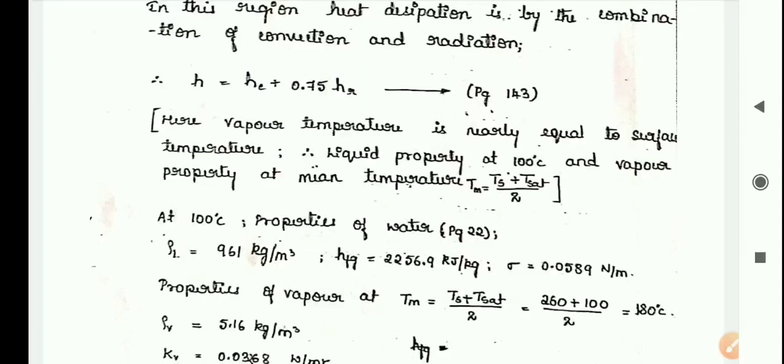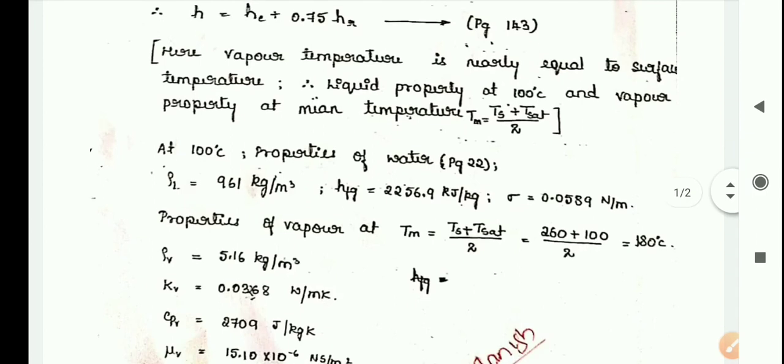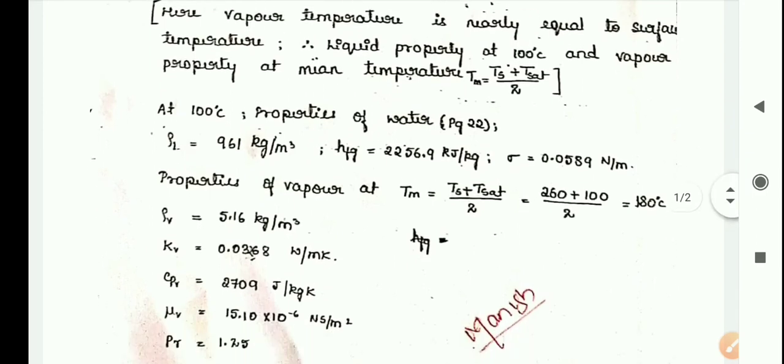For properties of vapor we have to consider T mean, which is at 180 degree Celsius. We have to note down these properties.